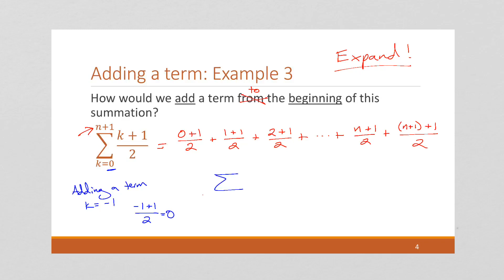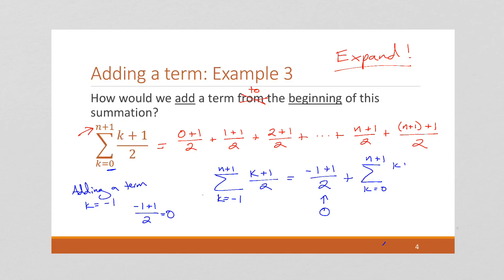We can write our new sum. Notice we're not adding anything to the end, so we keep our upper bound the same: n+1. But we're starting instead of at 0 — we go one back to negative 1. This equals our new term plus our old sum. And what's interesting is since we're adding a 0, we could really say that these two sums are the same, because it cancels out.